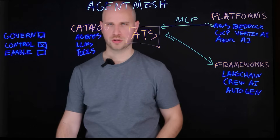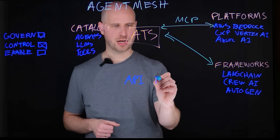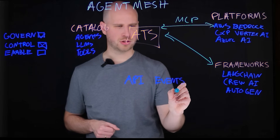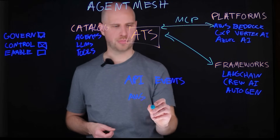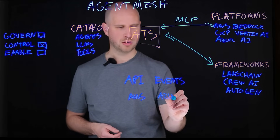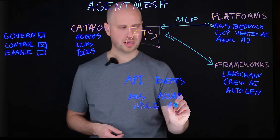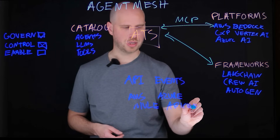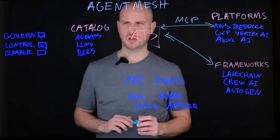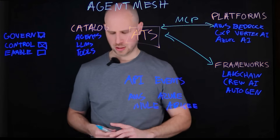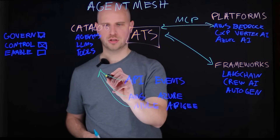Gravity has a very powerful capability called third-party federation. Not only can agents invoke APIs and events such as Kafka topics or Solace queues that run in the Gravity Gateway, it can also allow you to take your existing APIs that may run on Amazon or Azure API gateways, or maybe on MuleSoft or Apigee. Gravity has native connectivity to all those different API platforms and places like Solace and Confluent. Via this Agent Tool Server, it effectively converts those different APIs and events across different platforms to tools.